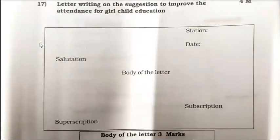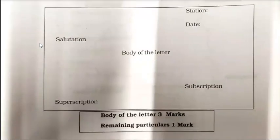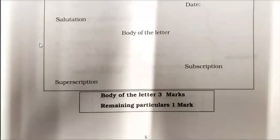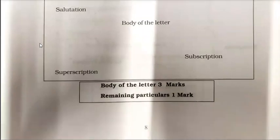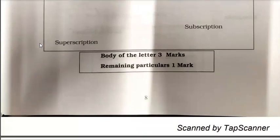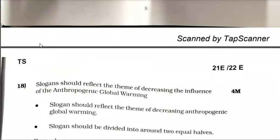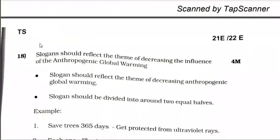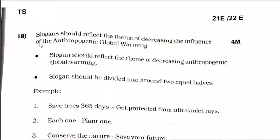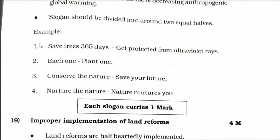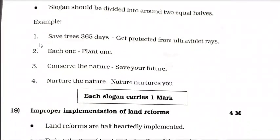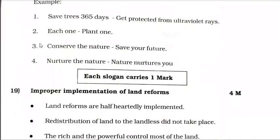There is a letter writing question on suggestions to improve attendance for girls' child education. The body of the letter is 3 marks and remaining particulars are 1 mark. For slogans again — for 4 marks, each slogan carries 1 mark, so 4 slogans give 4 marks.